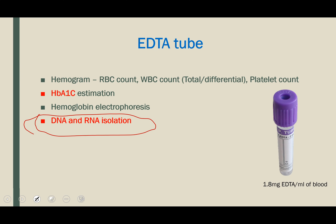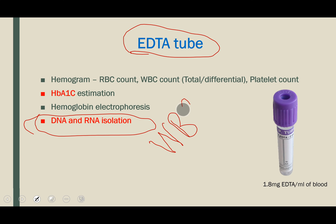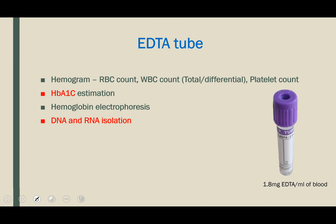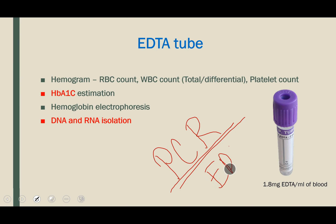For isolation of nucleic acids like DNA and RNA, you also use the EDTA tube, because we isolate nucleic acids from WBCs and want intact WBCs. However, when we later perform polymerase chain reaction (PCR), we remove the EDTA, because EDTA can chelate magnesium, which is required for DNA polymerase. So during DNA and RNA isolation we use EDTA, but not during PCR.